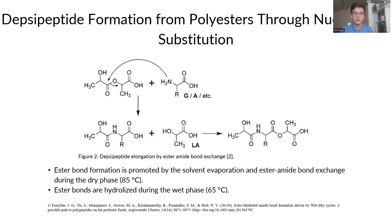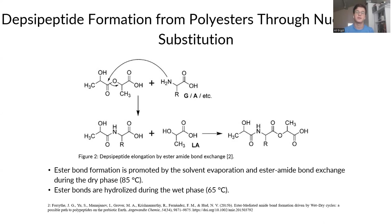In the wet-dry cycles, evaporation of the solvent promotes ester bond formation, and the ester-amide bond exchange occurs during the dry phase. During the wet phase, ester bonds are hydrolyzed. When these cycles are repeated, what we get is an elongating DEPS peptide chain with continuous peptide bonds within it.